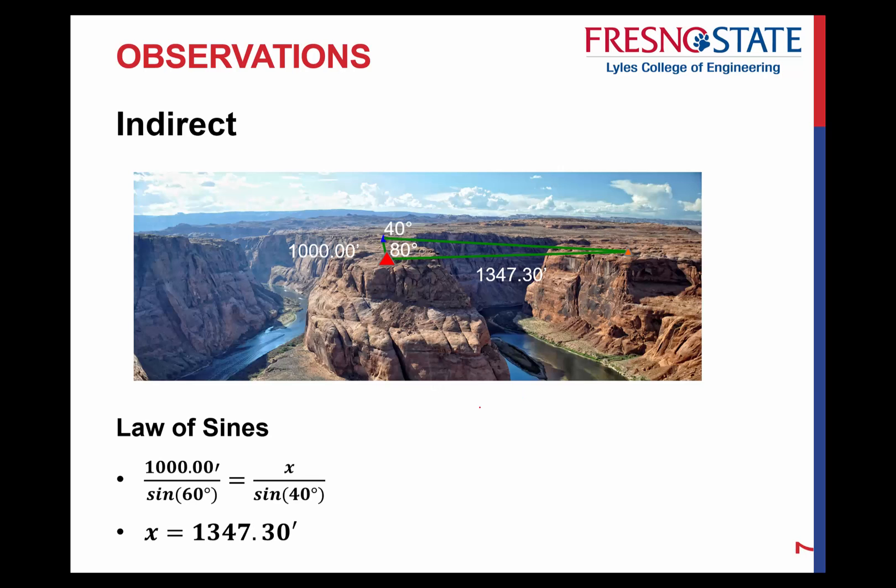So as you see right there, if I take the law of sines, I can then come up with what the distance going across the gorge right there, going over the river, ends up being 1347.30 feet. So that's an example then of using direct measurements to be able to calculate indirectly other measurements.